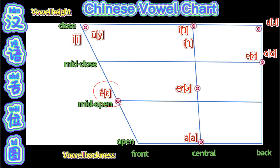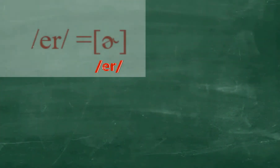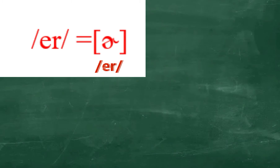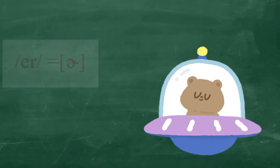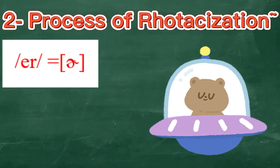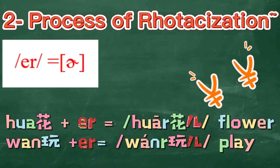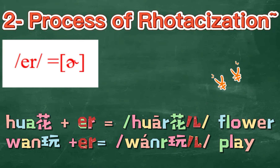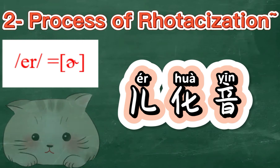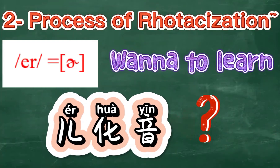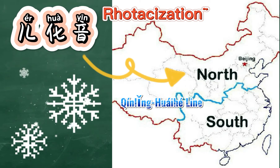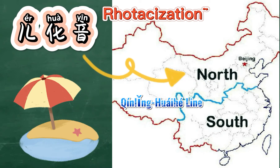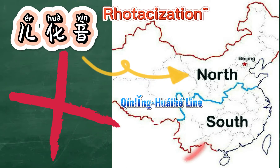Now let's see two unrounded vowels. For the 'er' sound, we should note that as a special vowel, 'er' is an independent syllable — it does not combine with any initial consonants. The 'er' sound is also a phonological process in which 'r' is added to other syllables, called the rhotacization of syllable finals, or 儿化音 in Chinese. Mandatory rhotacization 儿化音 is only very common in North China, meaning people from South China often do not know how to pronounce rhotacized finals even among well-educated speakers.